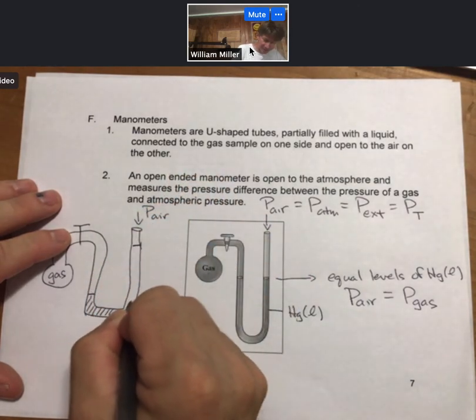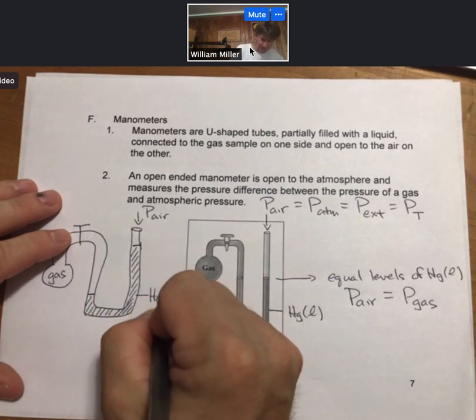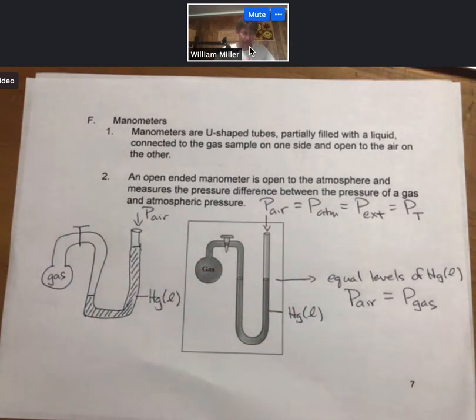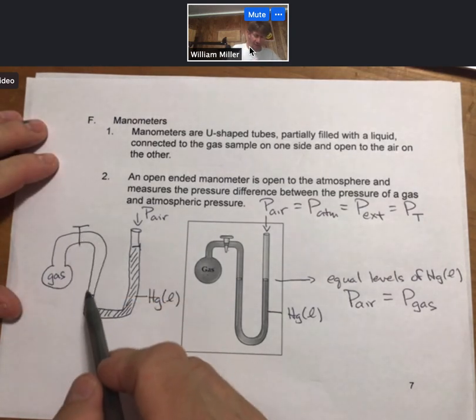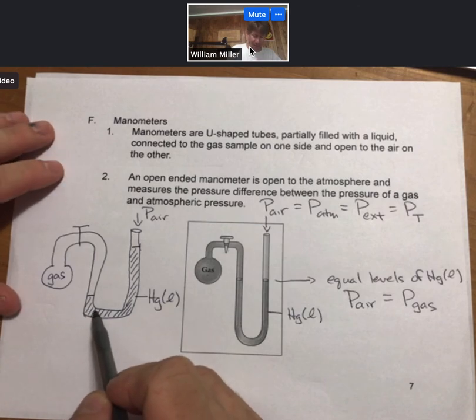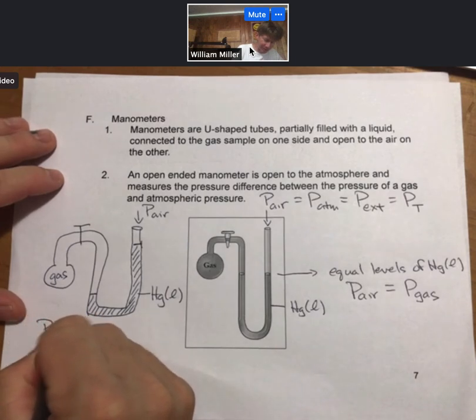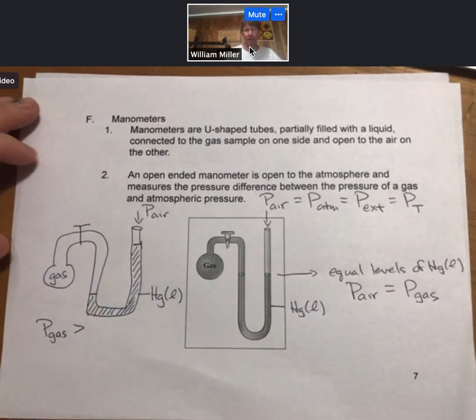And I'll cross-hatch this in. And this is still mercury in the tube. My question for you is, does the gas or the air have a higher pressure? You can think of the fact that the gas is pushing down and is able to push the mercury down farther. So the first thing we can say about this is that the pressure of the gas is greater than the pressure of the air.